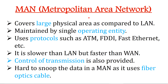The second type of network is the Metropolitan Area Network. MAN covers a larger physical area compared to LAN but smaller than WAN. It is maintained by a single operating entity such as government offices, healthcare systems, or other large organizations. MAN allows communication over large geographical areas with protocols such as ATM, FDDI, and Fast Ethernet. MAN is slower than LAN but faster than WAN, and its propagation delay is greater than LAN.